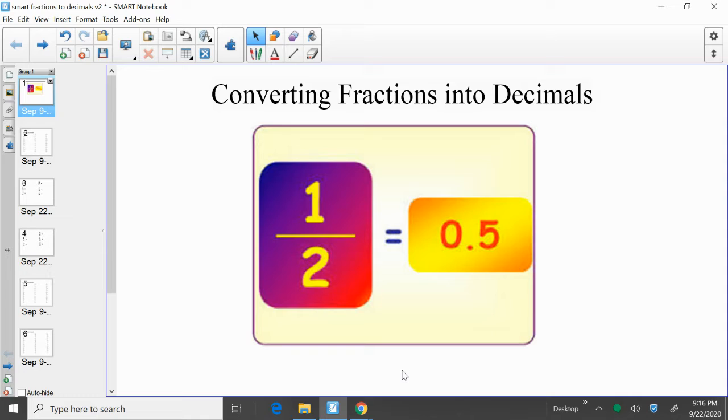But you can use a calculator to do this calculation of converting fractions into decimals. So just like you see on the screen here, taking a fraction, turning it into a decimal. And you notice that it says they're equal. So in other words, one half equals zero point five.